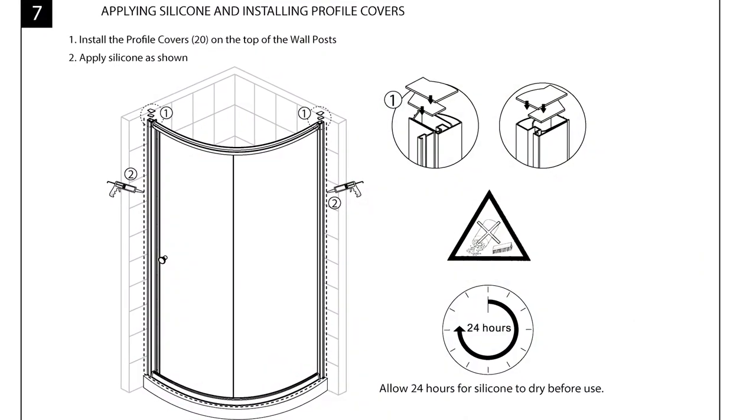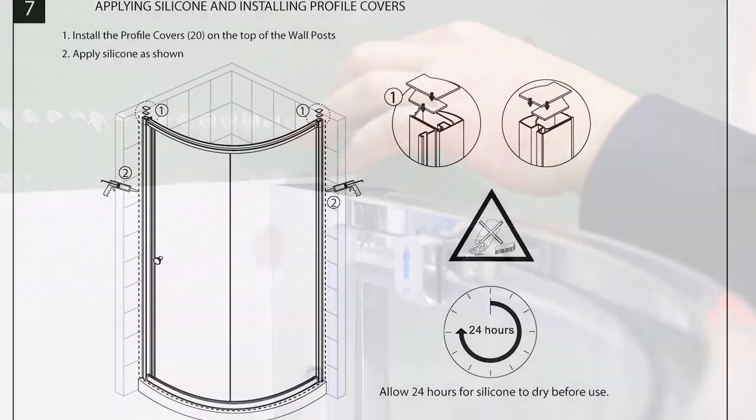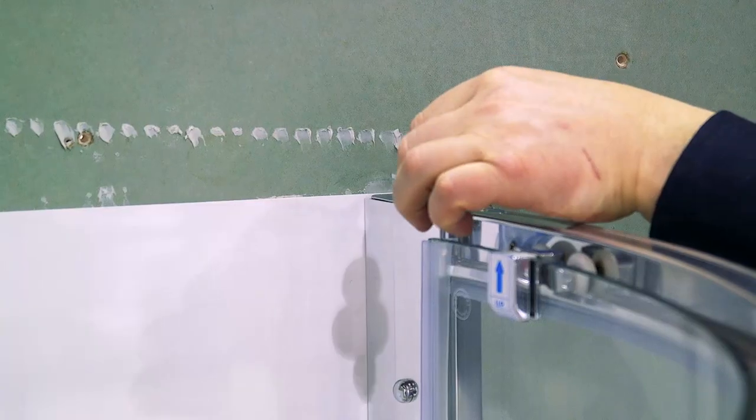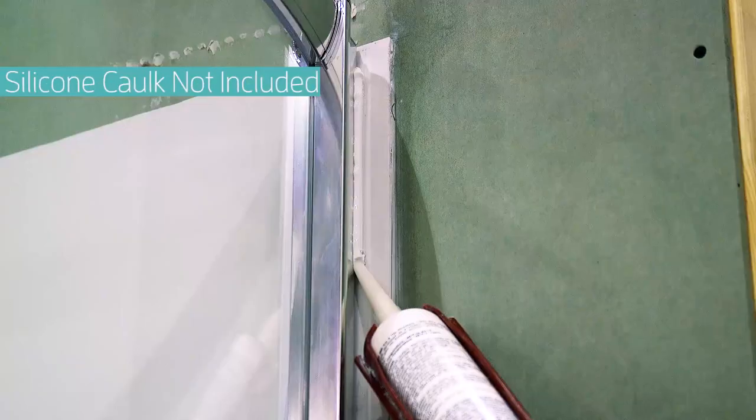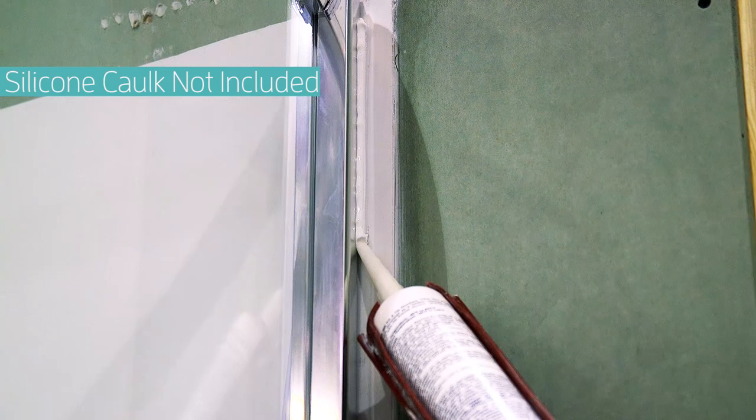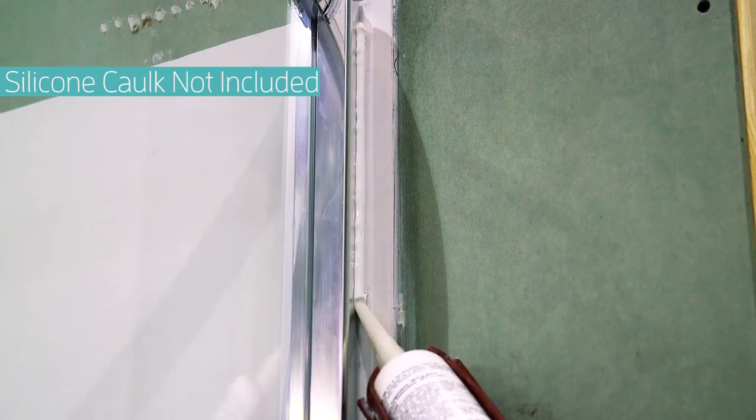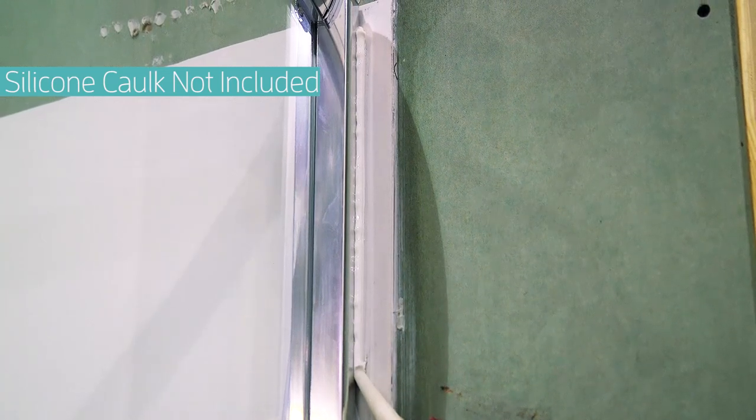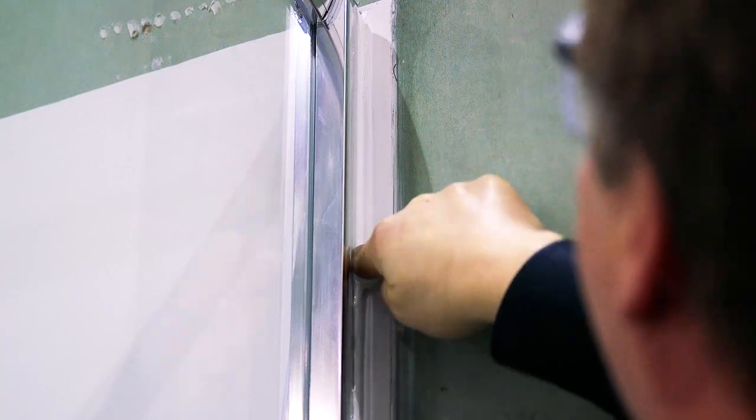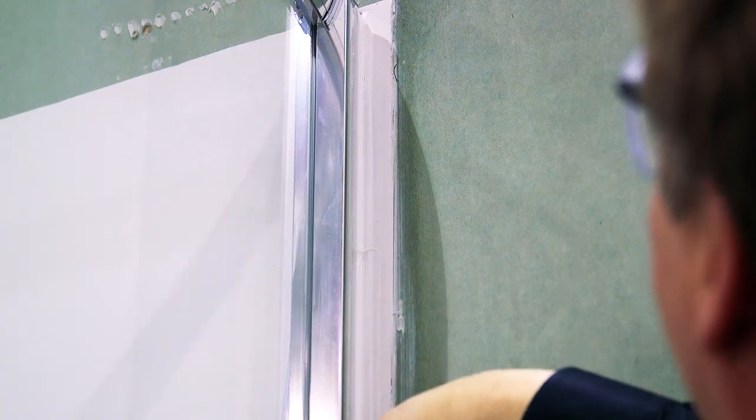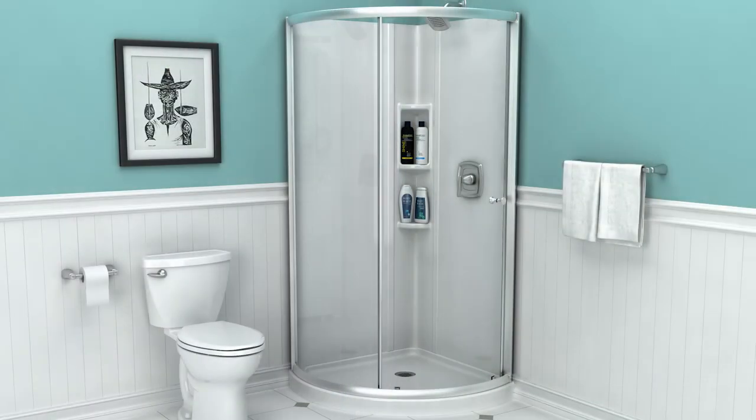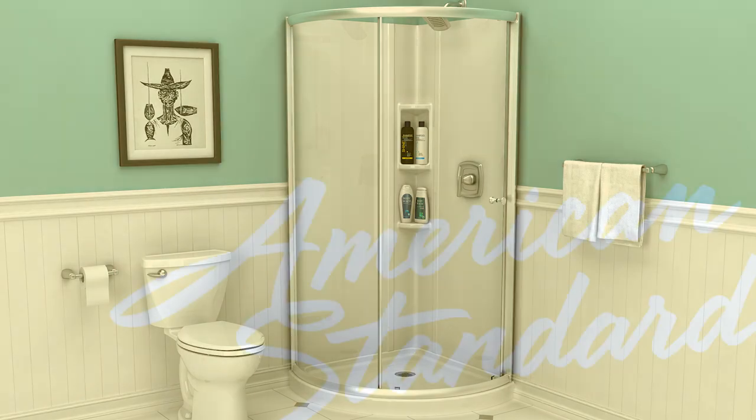There are two steps in the final section, Section 7. First, install the wall jam and extender caps on the top of the wall posts. Finally, apply silicone between the wall posts and shower wall and bottom of the frame and shower base. Allow the silicone to dry 24 hours before using the shower. This completes the installation of the AXIS 36 inch curved shower door. Please reference the installation guide for cleaning and maintenance of the shower door.